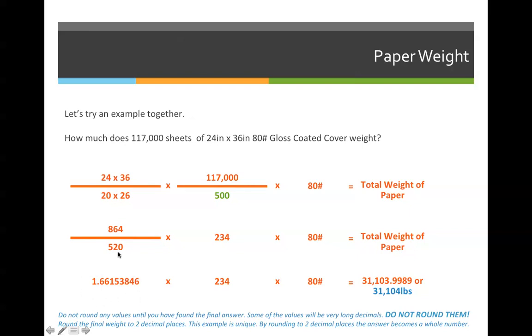I could then divide 864 divided by 520 and I'll get a decimal. It is extremely important never to round this number. For the same reason that we don't round the square inches of ink coverage, we do not round this decimal here. Rounding this decimal can drastically change the answer that you get when you finish the total number of pounds. So when you're calculating paper weight, do not round any numbers whatsoever until you come up with the total number of pounds at the end.